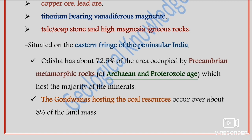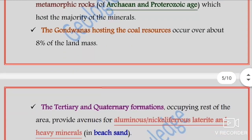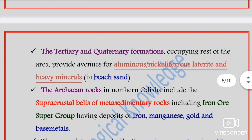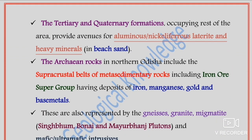The Gondwana coal is hosted by eight percent of the land mass of the state. The Tertiary and Quaternary formations occupying the rest of the area provide avenues for aluminous and nickeliferous laterite, as well as heavy minerals in the beach sand of Odisha's coastal and oceanic region.